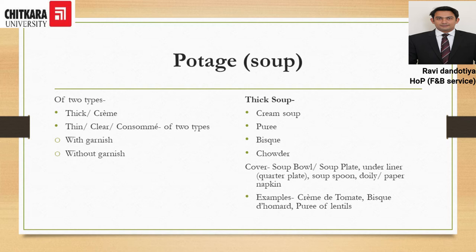An important thing to remember about soup is that different types have different cover setups. For a thin soup, the cover would be a soup bowl, a B&B plate as the underliner, a doily paper, and a dessert spoon. For a thick soup, the cover would be a soup plate, a dinner plate as the underliner with a doily paper, and a soup spoon.